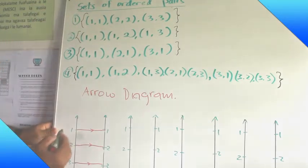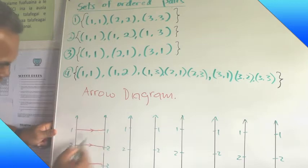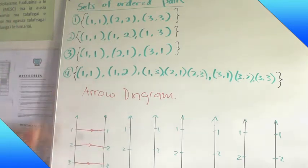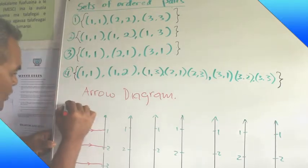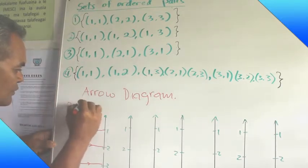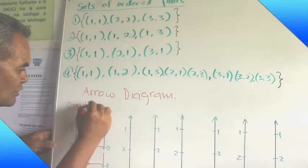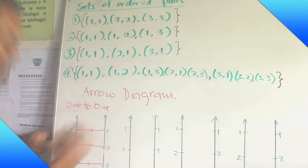So what we have now is this arrow diagram represents the first set of ordered pairs. And we can name that relation one to one, two to two, three to three. The special name for this arrow diagram for this relation is one to one relation.